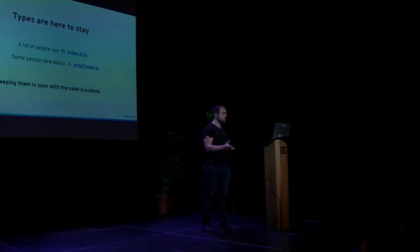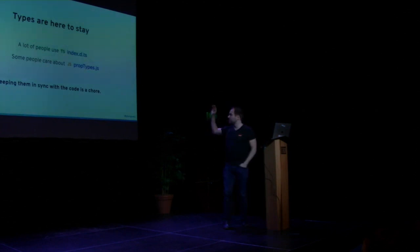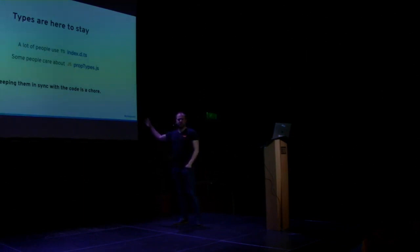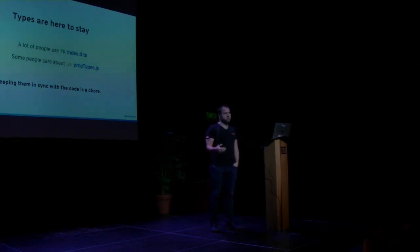There are also some people - it's getting less and less - who still care about PropTypes. I personally don't care much about PropTypes, but they're both in the library. Keeping them in sync with the actual source code is just a pain. It's not necessarily a lot of work, but it's work. The way I handle it right now is: if you open a pull request, I have a pull request template with a checklist - did you update the type definitions for TypeScript? Did you update the PropTypes? And you have to check them all.